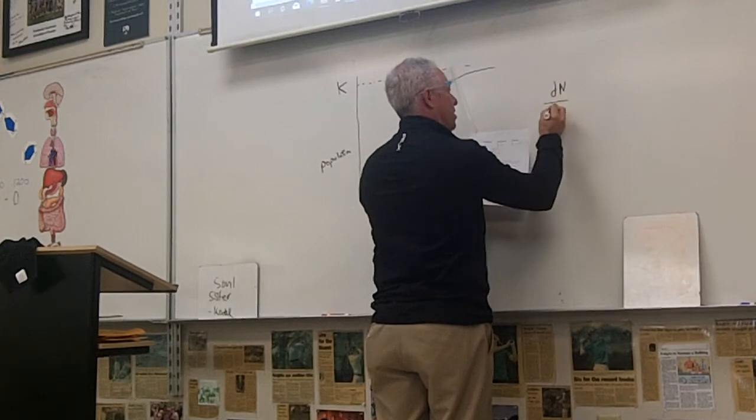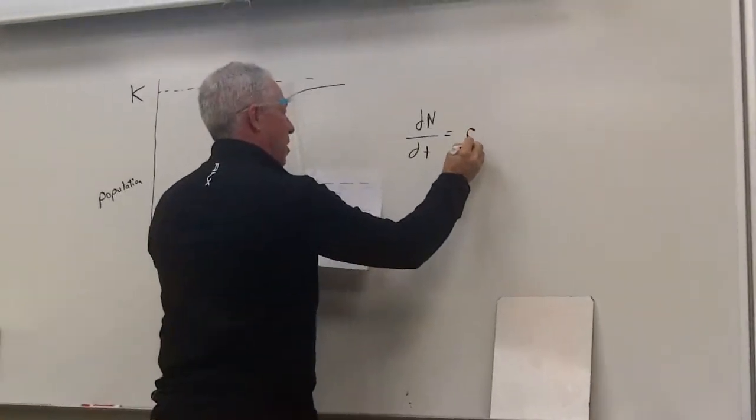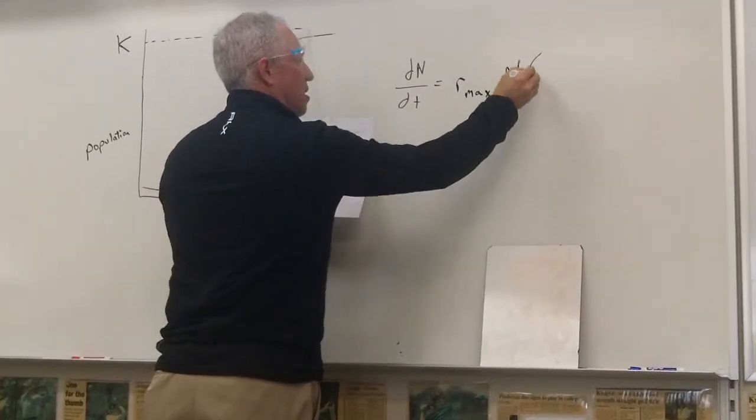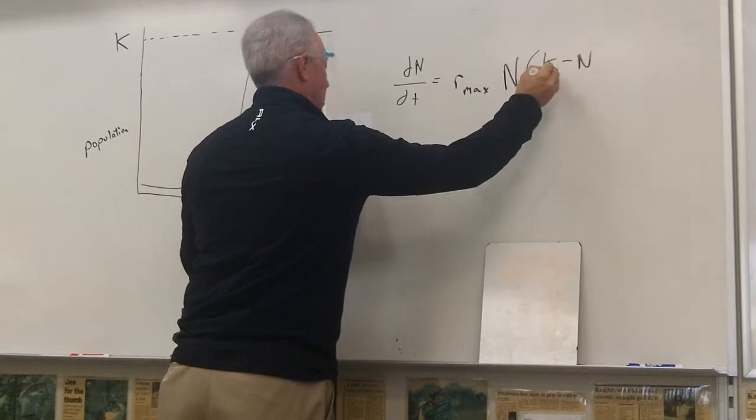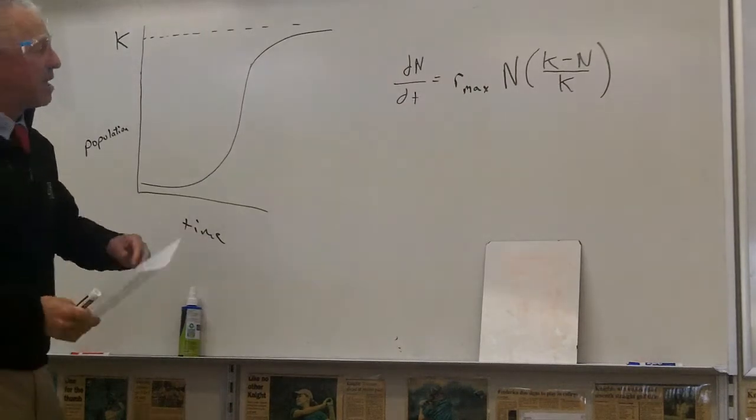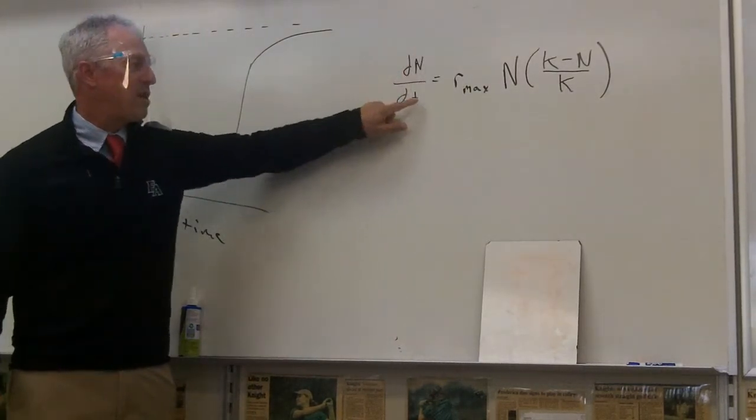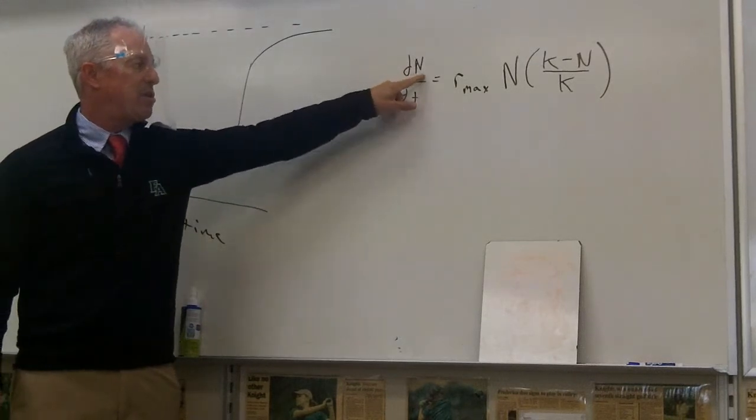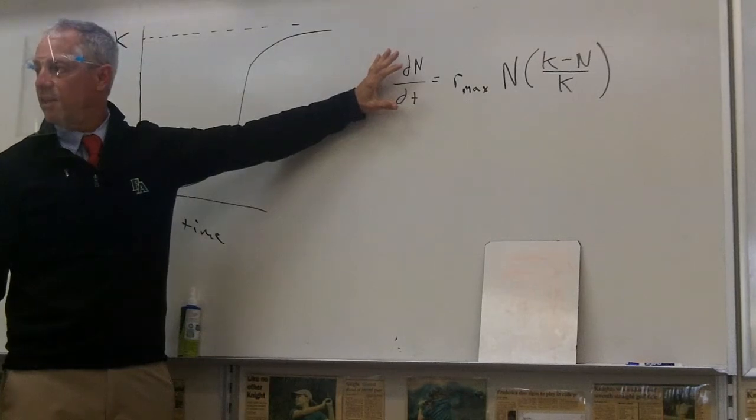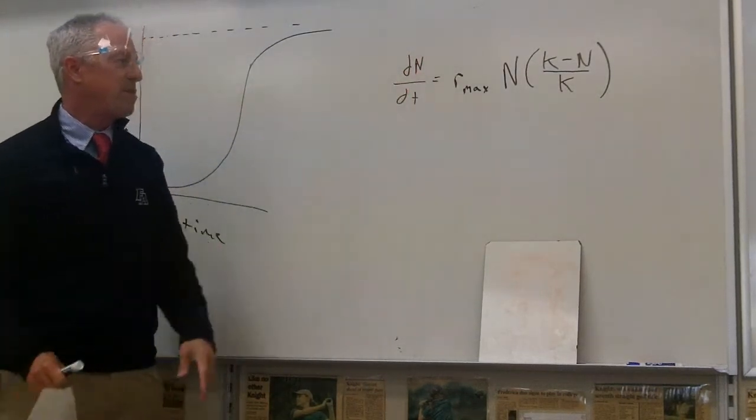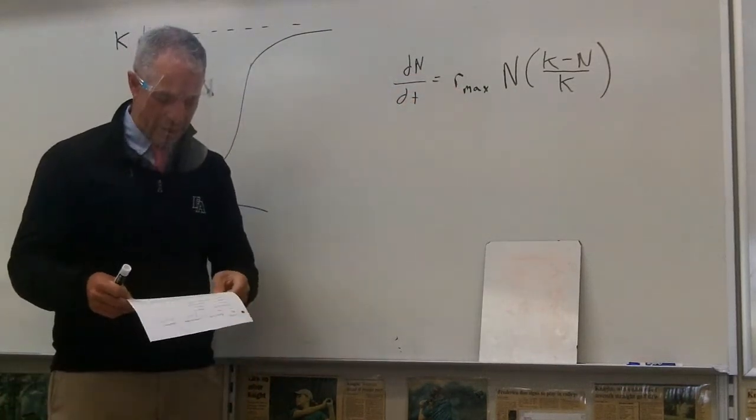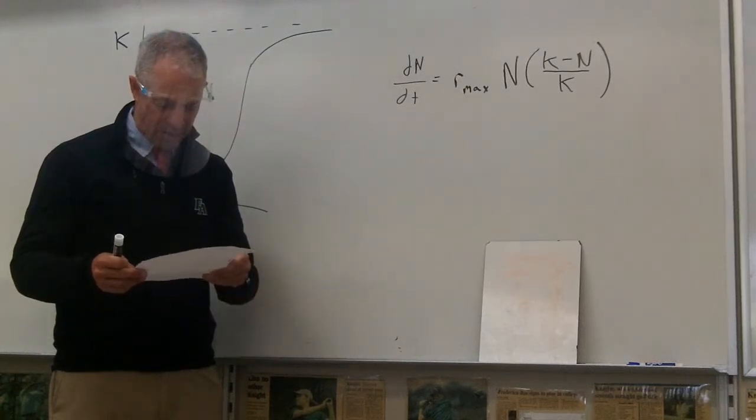dN over dt equals r_max times N times K minus N over K. So let's think about what everything is. What does this represent? The change in number. The change in number over the change in time. It's how the population will change. That's often the answer you get when they give you the stuff. Now the r_max is the rate of increase for the population. And sometimes that's given to you in the question.